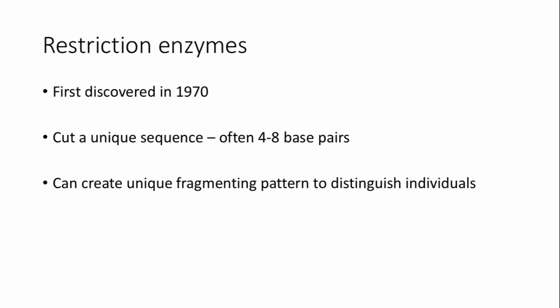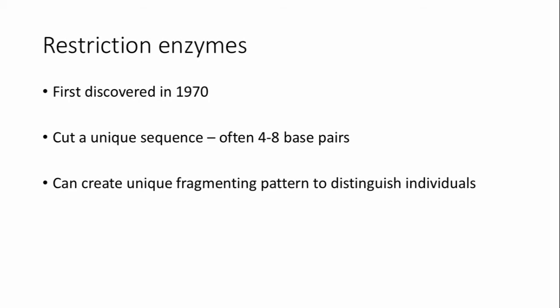The second kind of marker that developed, the next form of empirical data in population genetics, are restriction enzymes. These are proteins that can cut DNA at a certain recognition sequence. It's usually four to eight base pairs. And they just cut this sequence. This creates a unique fragmenting pattern. And they can distinguish individuals if they differ in where they have these four to eight base pair sequences.